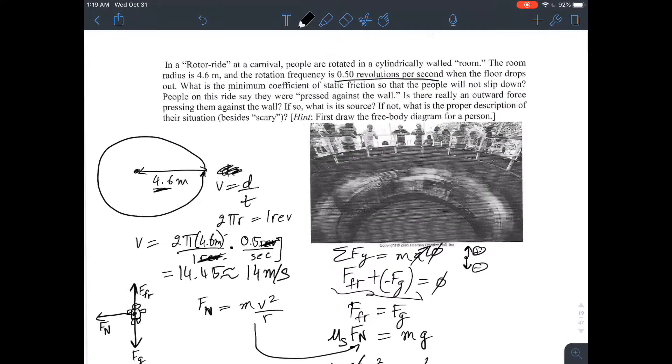And that is the minimum coefficient of static friction so that people will not slip down. That strikes the right balance. There's equilibrium. And you will not fall down. So, people said they were pressed against the wall. There's no outward force.